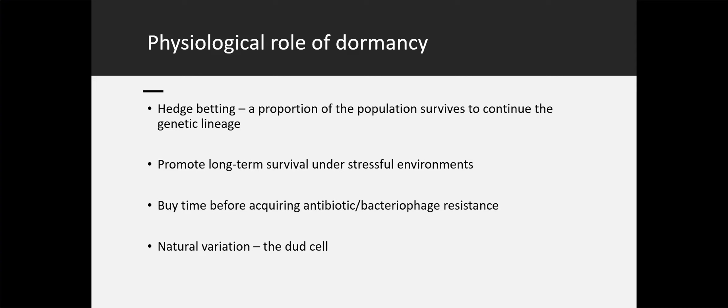We don't need to know that much about why there are persisters and VBNC. It's obvious. It's hedge betting. There's no population that's homogeneous. You should always have a sub-population that holds back for when trouble arrives. It does promote long-term survival because most bacteria don't live in labs. Most bacteria live in the environment, which isn't a pleasant place. It's basically buying time to get antibiotic resistance, or maybe it's just natural variation. Maybe some cells are born into dormancy.